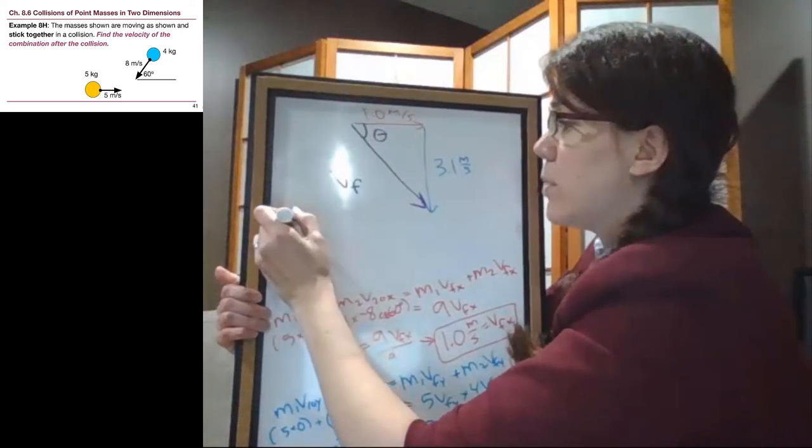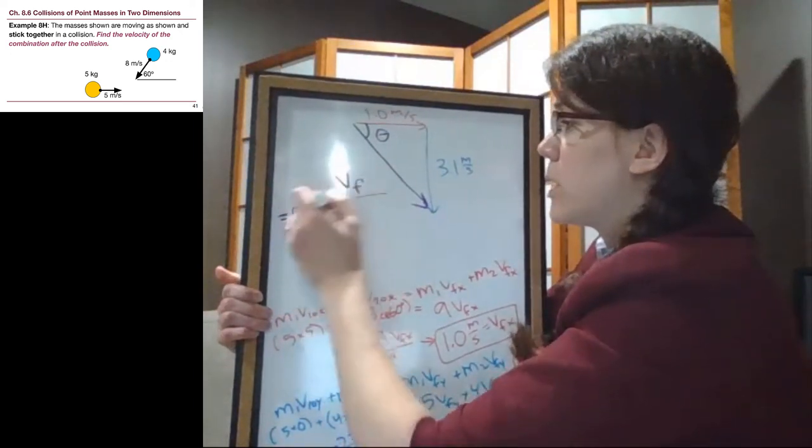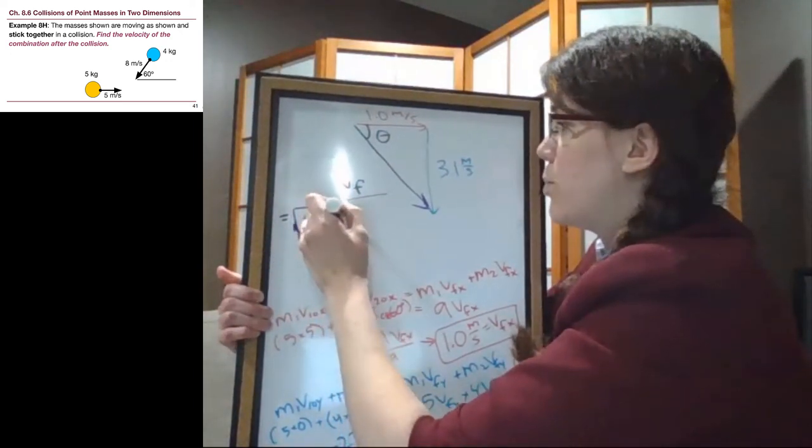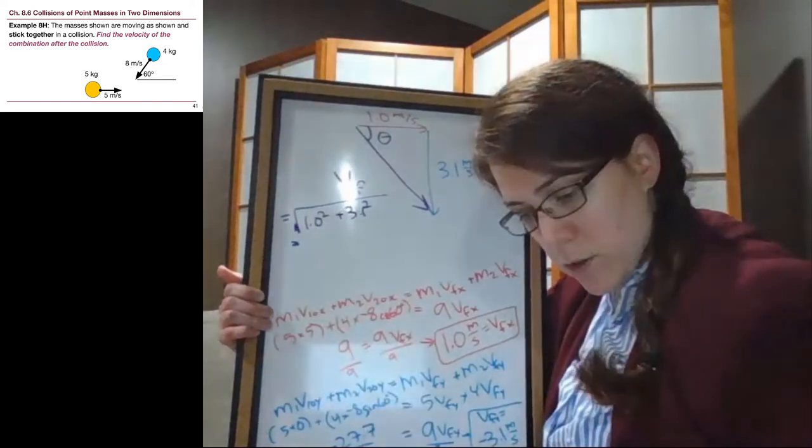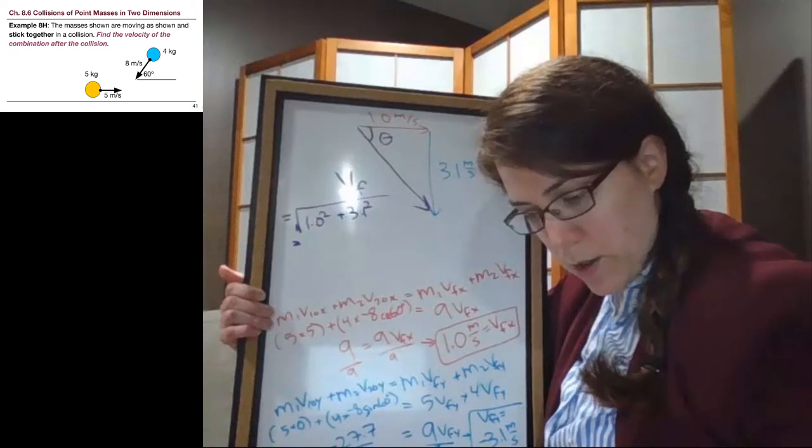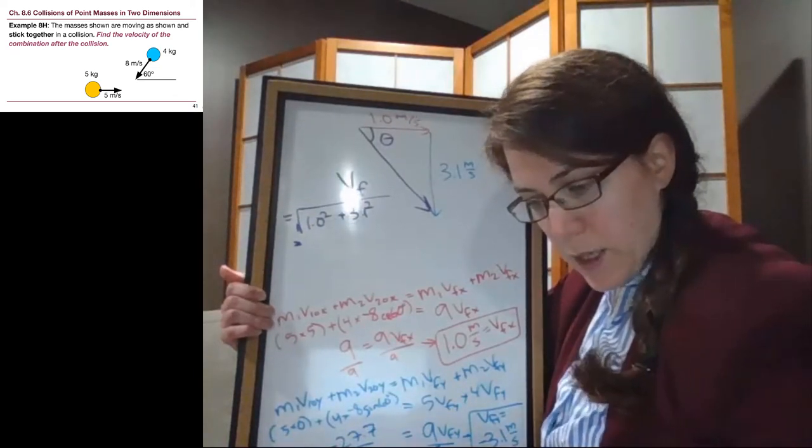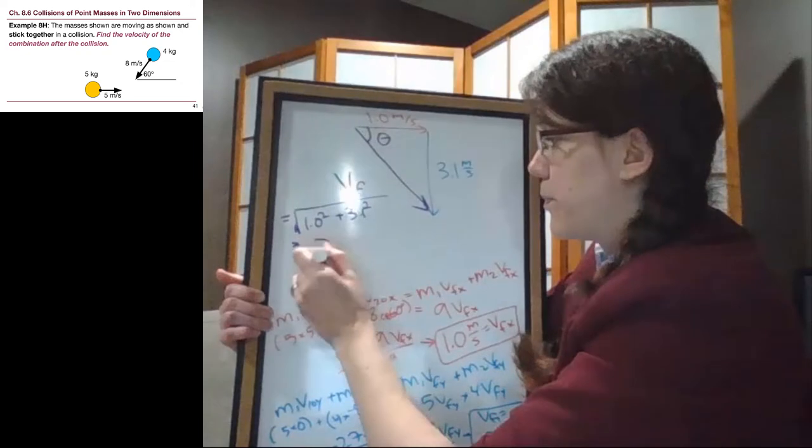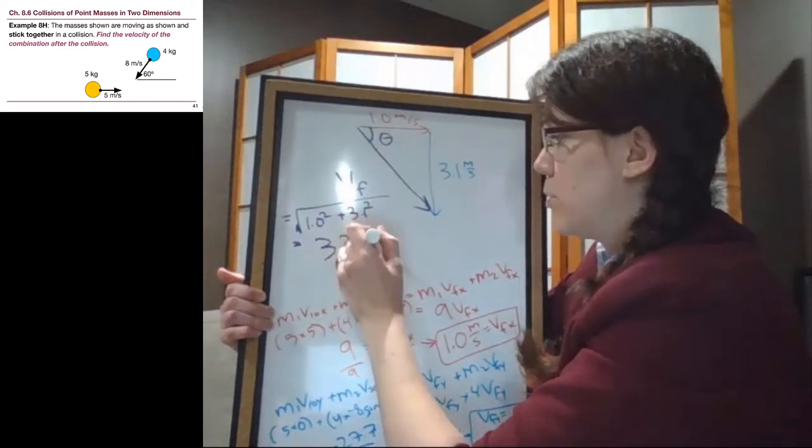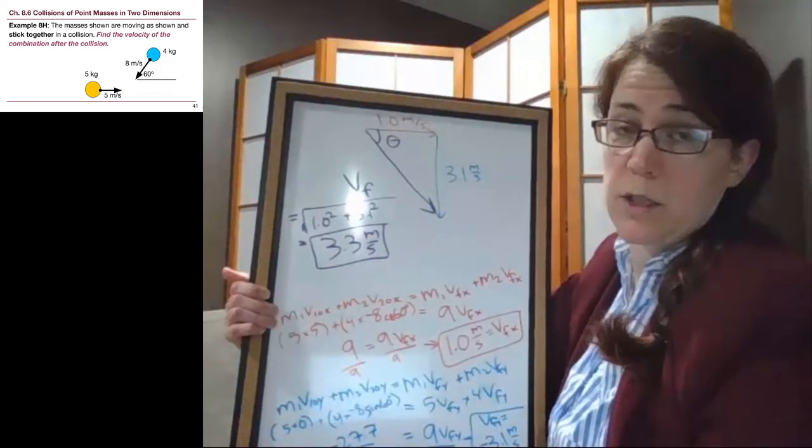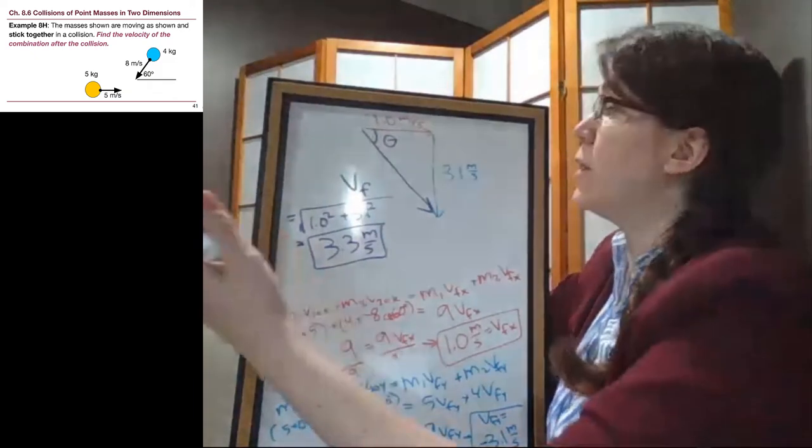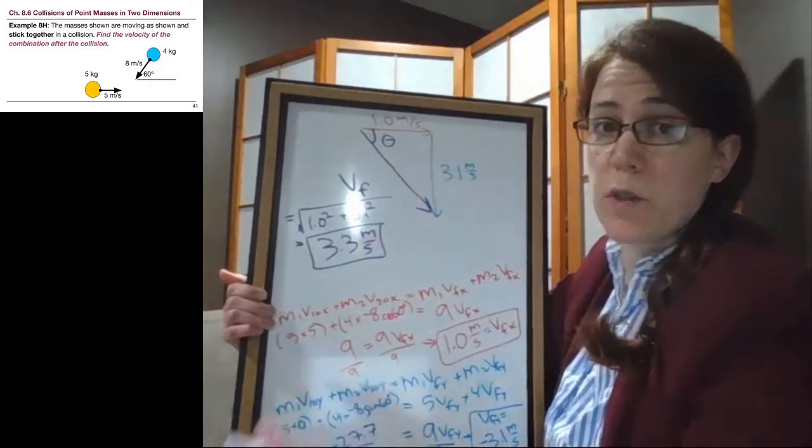So for this one, we're taking the Pythagorean theorem again. We're going to take the square root of 1 squared plus 3.1 squared. And so the square root of 1 squared plus 3.1 squared is 3.3 meters per second. So that is the overall speed that these things are moving, the value, the size of the velocity.